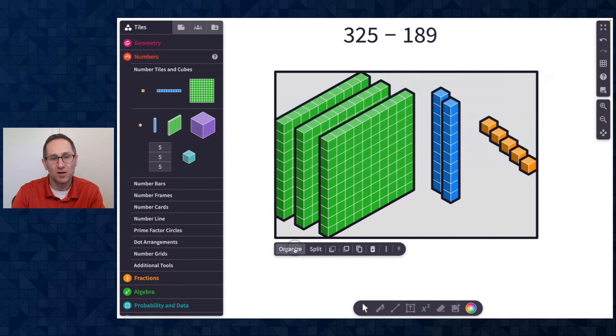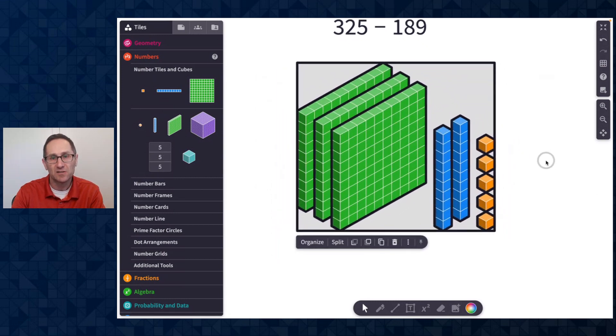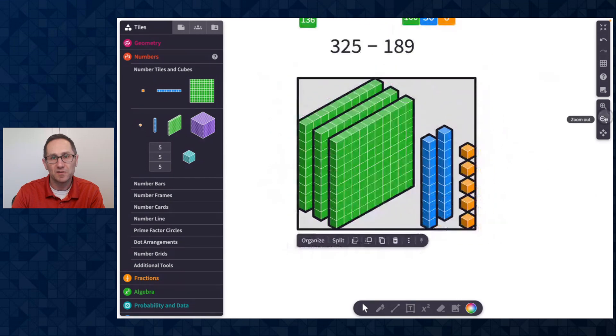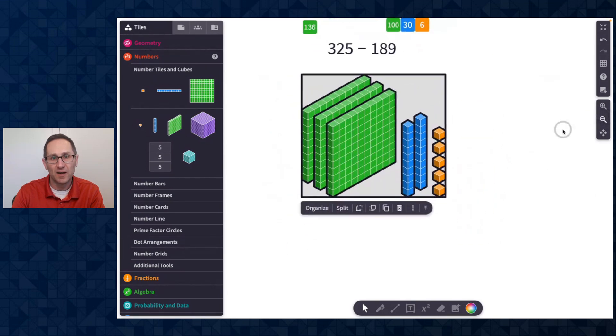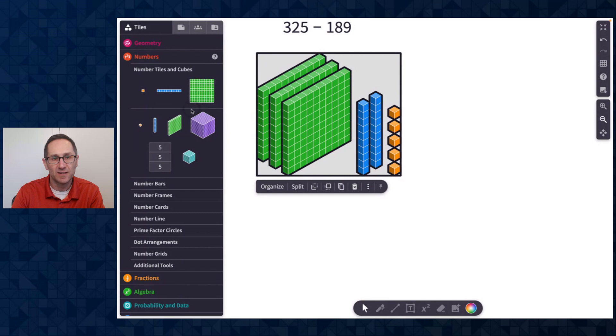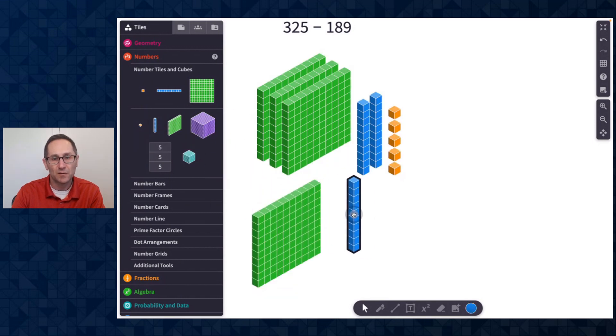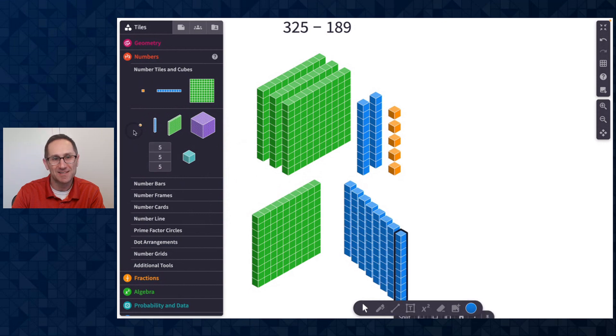I'm going to select all, click the organize button in the action bar just to make that a little bit neater. Let me zoom out a little bit more. And now I need 189 underneath it. So here is 100. I will do 1, 2, 3, 4, 5, 6, 7, 8 just using the C button on my keyboard. And 9.